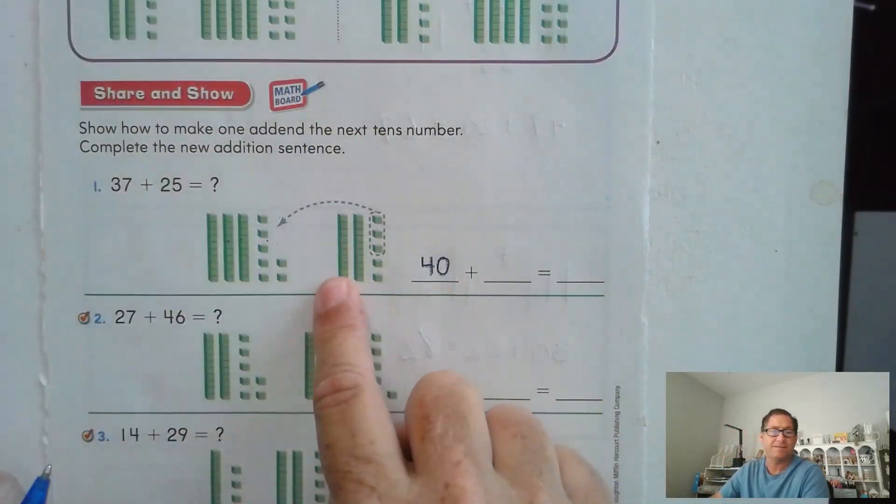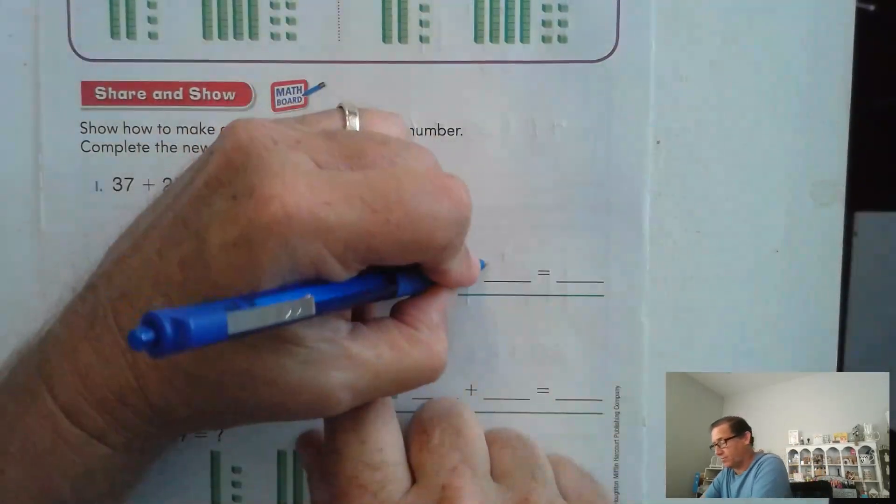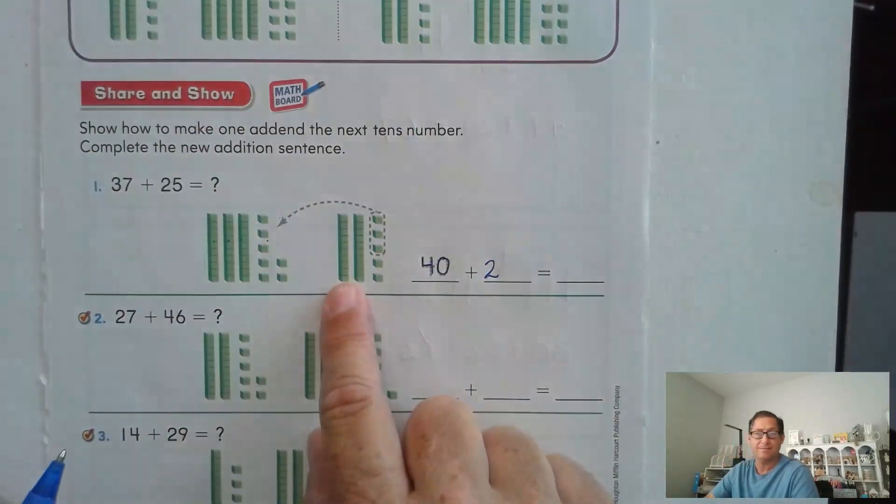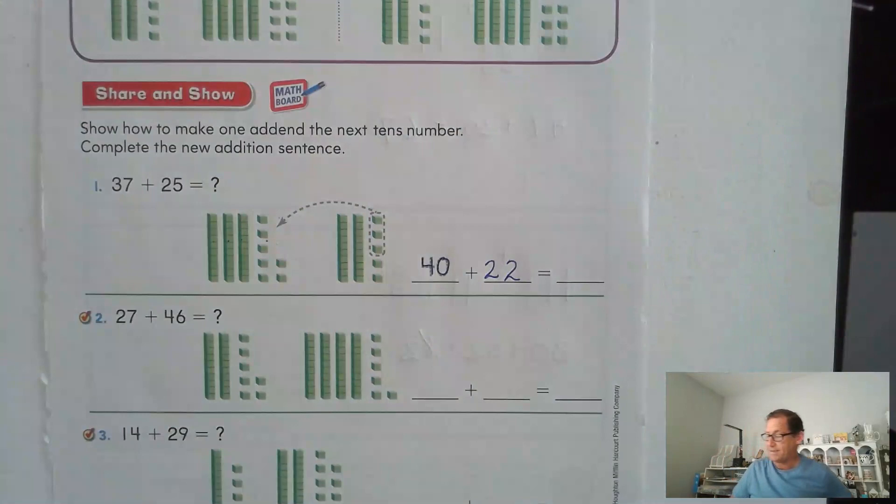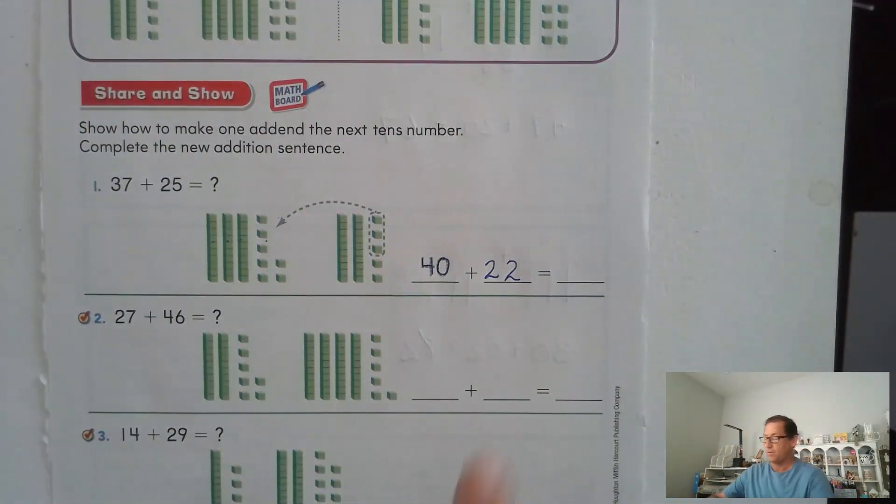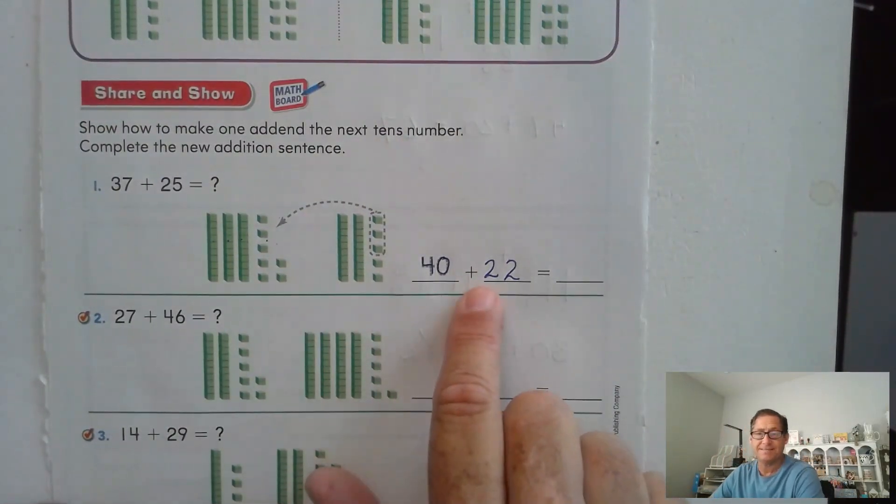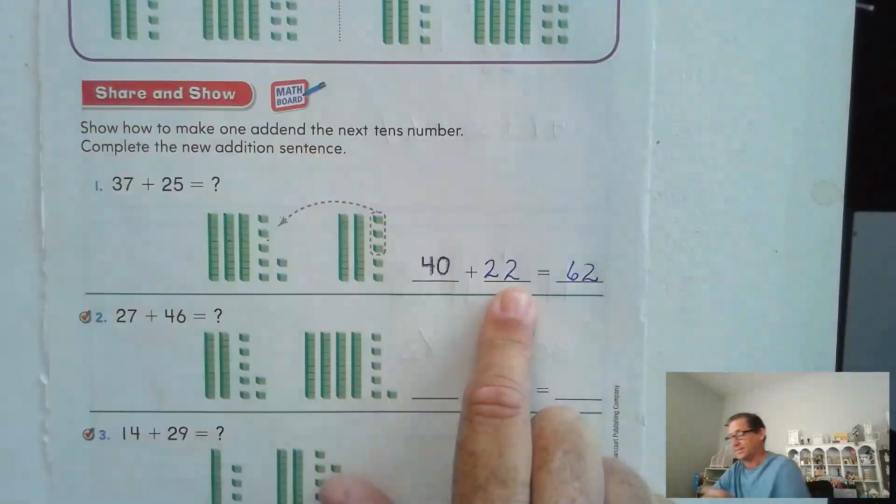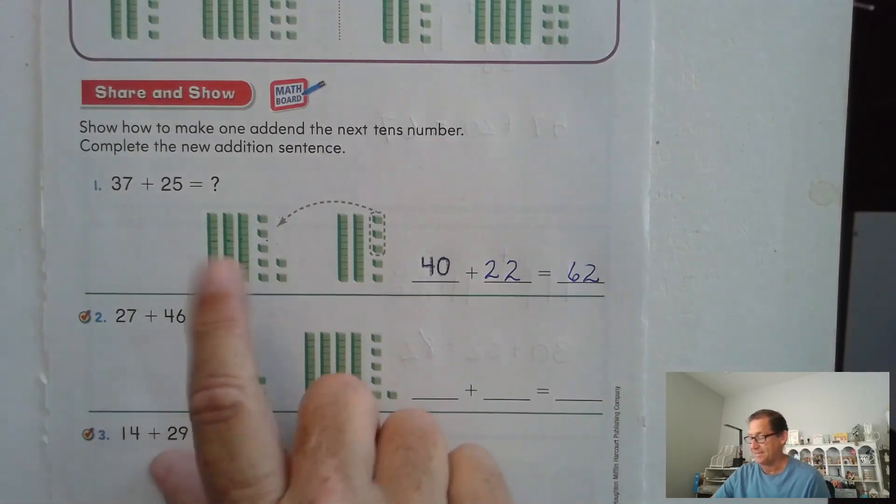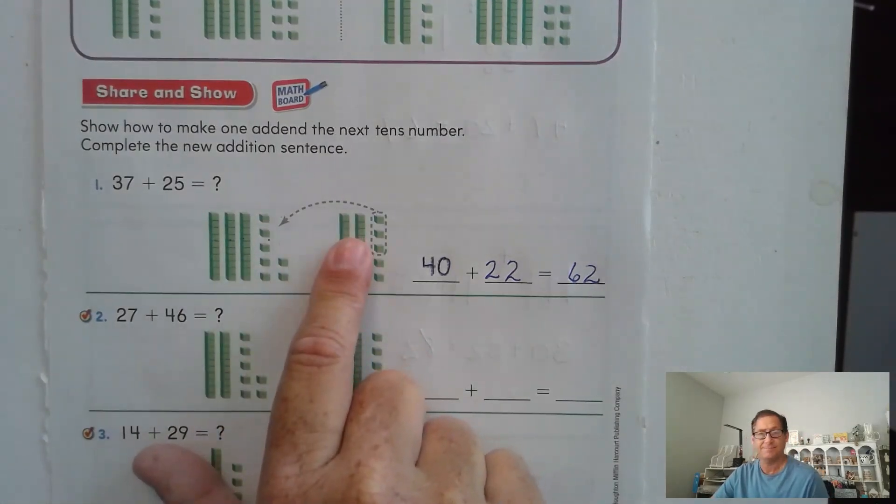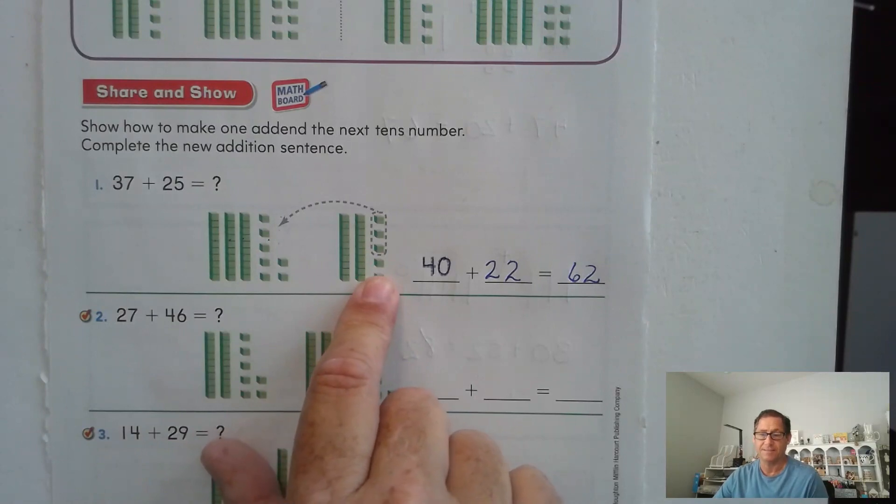And what's left of the 25? Well, we still have two tens, but we only have two ones. So we have 40 plus 22. Well, 40, 50, 60 plus two ones, 62. All I did was count the tens, four, five, six, and we had two ones left, 62.